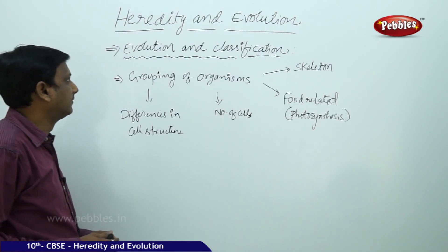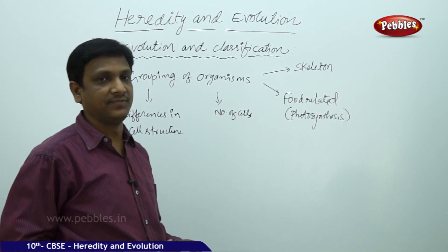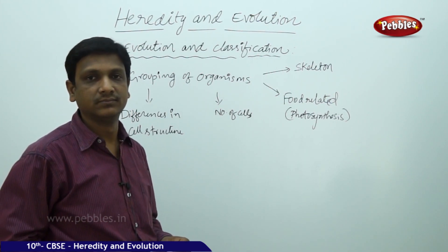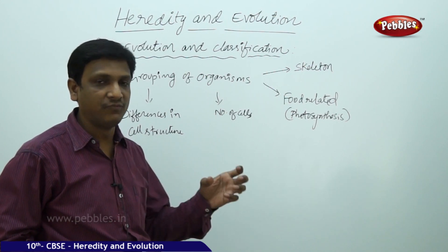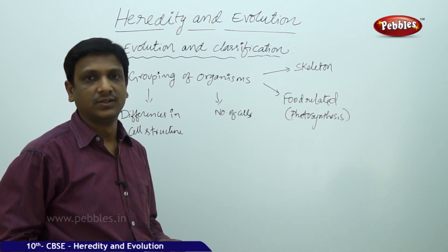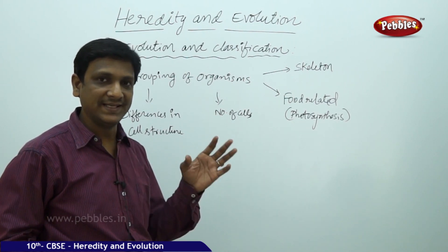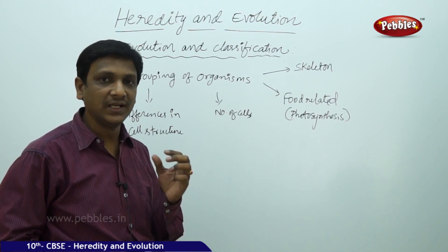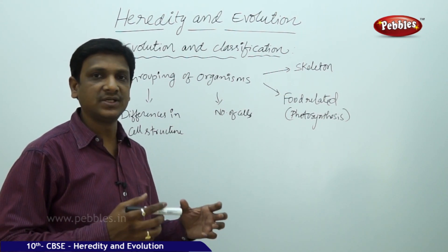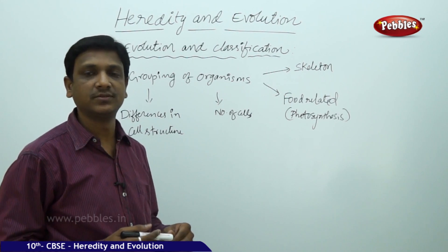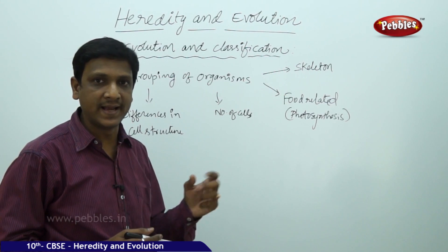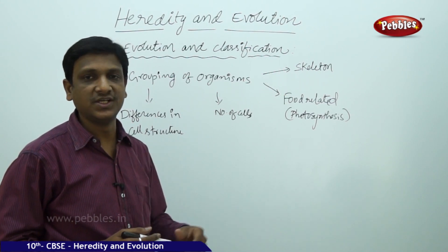Let us see the link between evolution and classification. We studied how traits are inherited and how variations lead to the formation of new species — speciation. We understood the various situations and conditions which lead to formation of a new species, including natural selection, where variations help organisms adapt according to changes in the environment.